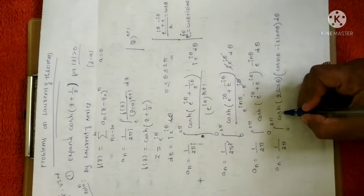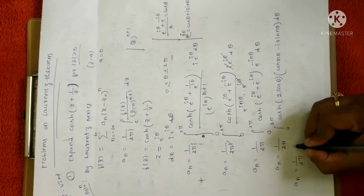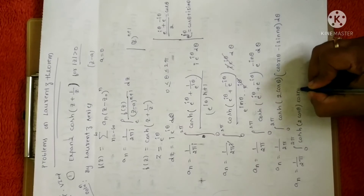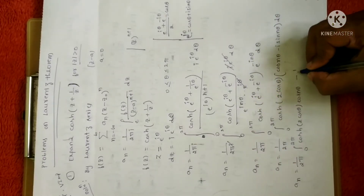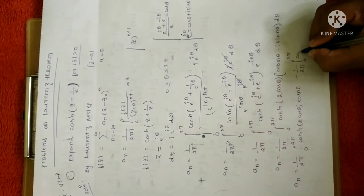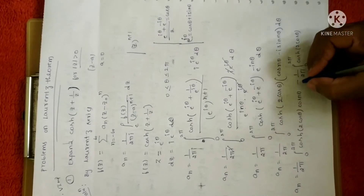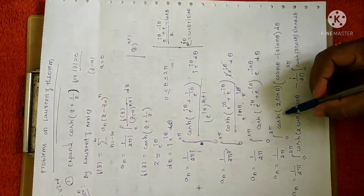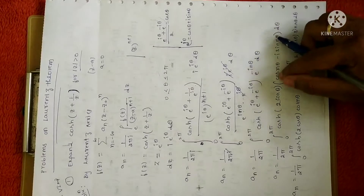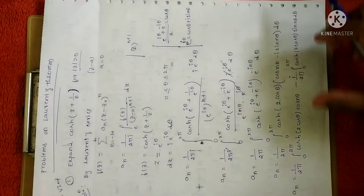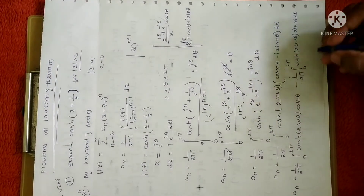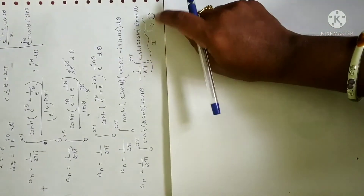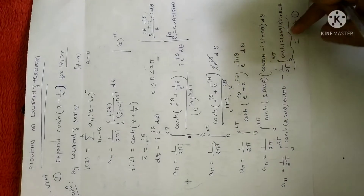Now split into two terms: a_n = (1 / 2π) ∫₀²π cosh(2 cos θ) cos(nθ) dθ − (i / 2π) ∫₀²π cosh(2 cos θ) sin(nθ) dθ. Let me call this equation 1. Now consider the second integral as I, so I = ∫₀²π cosh(2 cos θ) sin(nθ) dθ. I need to evaluate this integral.